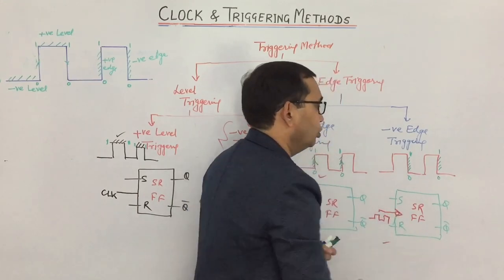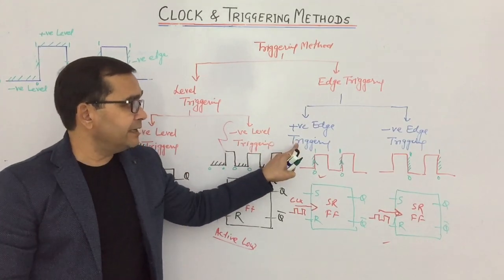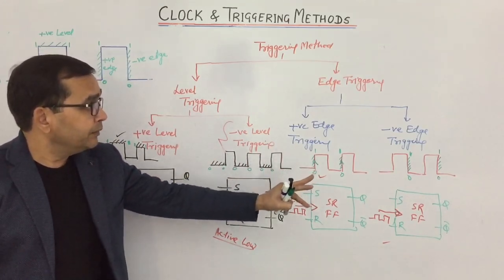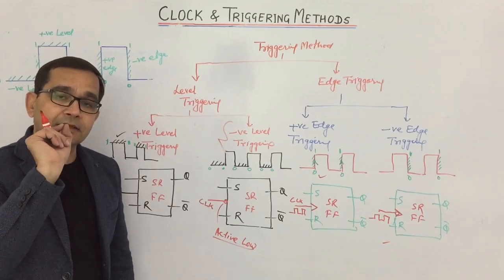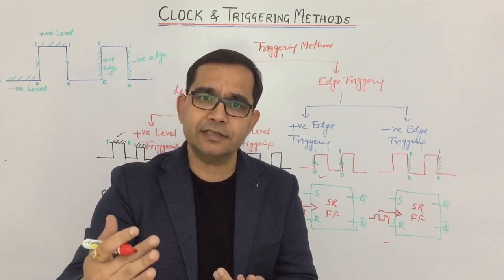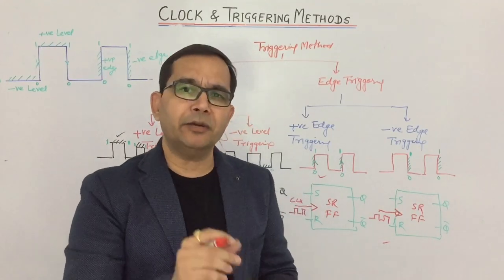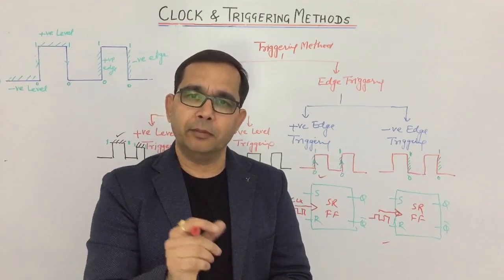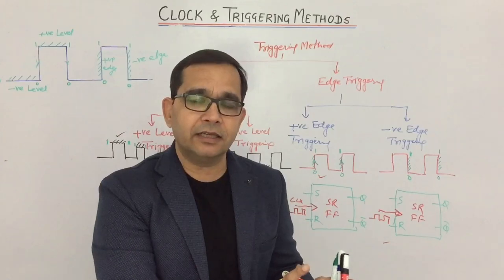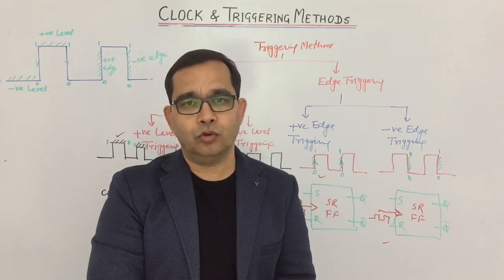So we can categorize four types: positive level triggering, negative level triggering, positive edge triggering, and negative edge triggering, based on the four parts of the clock pulse. Clock signal and triggering methods are very important topics used in all sequential circuits. If you have any queries, doubts, or suggestions, please write in the comment box. If you watch these videos from start to finish, you will not need to refer to any book for sequential circuits and flip-flops. Thank you.